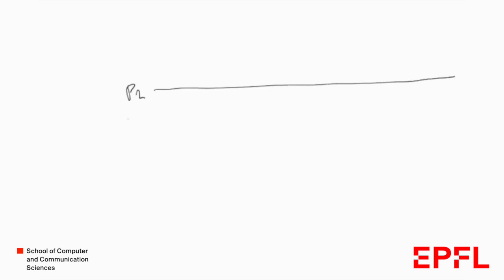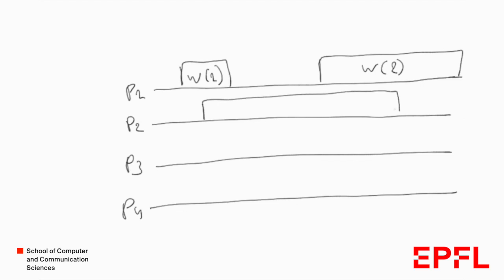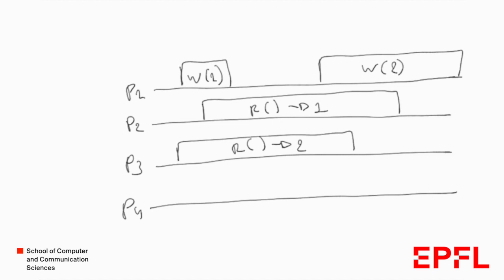Let's see another example with four processes: P1, P2, P3, and P4. Process P1 performs two writes: first writing value 1, then value 2. Process P2 performs a read returning 1, process P3 performs a read returning 2, and process P4 performs a read also returning 2.